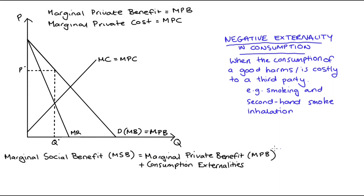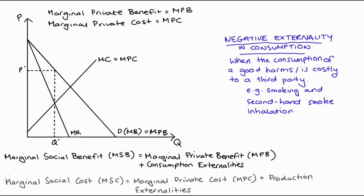The marginal social benefit function tracks the sum of all benefits from consumption for each marginal unit consumed — that's the benefit afforded to the consumer for each unit, which is our marginal private benefit, plus we account for any externalities that arise from consumption. We also have our marginal social cost function, which tracks the sum of all costs of production.